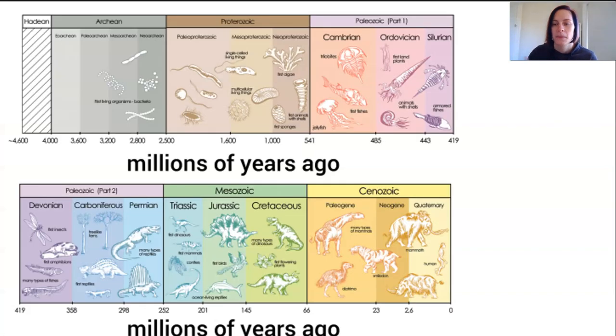Prokaryotes appeared in the timeline about three and a half billion years ago with photosynthetic bacteria able to begin the change of the composition of the atmosphere ever so slightly. The first eukaryotes then appeared through the theory of endosymbiosis, which we've discussed previously, about two billion years ago, and then multicellular organisms and animals start appearing.